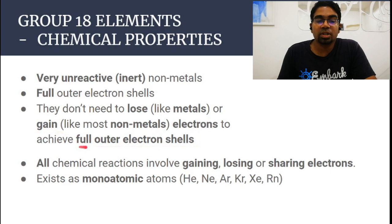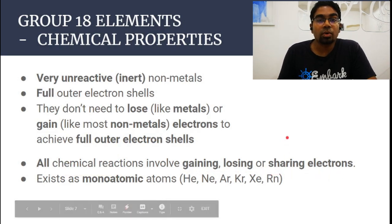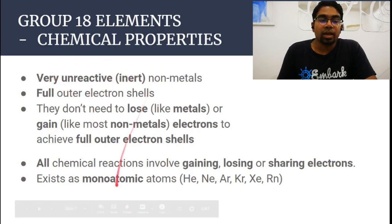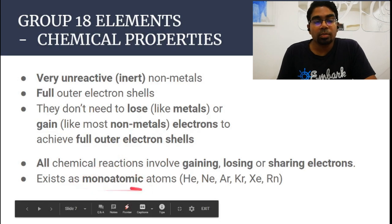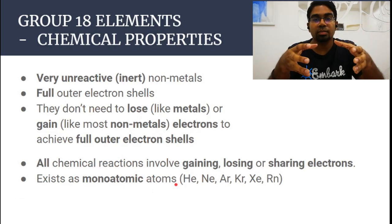Since they are already full, they don't need to lose electrons or gain electrons to achieve the stable structure. They are already stable. There is no need to lose or gain electrons. Why is this important? Because all chemical reactions are actually gaining, losing, or sharing of electrons. In this case, there is no need to lose or gain or share electrons. That is why they are unreactive and they exist as monoatomic atoms.